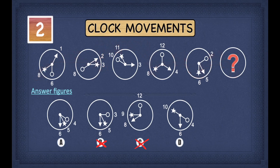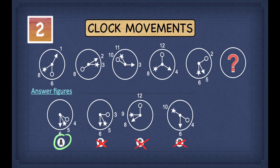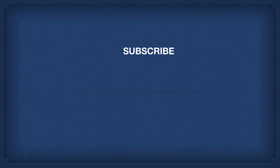Out of A and D, we need to find which option has the star pointing to 5. As you can see, A points to 5 whereas D points to 10. Therefore we cross out D, and our answer is A.